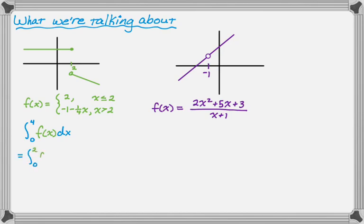So to deal with this, what we're going to do is just break it up, right? So it has a jump discontinuity because it's really a piecewise function. So we're going to break it up at the breaking point and do the integral from 0 to 2 of f(x)dx plus the integral from 2 to 4 of f(x)dx.